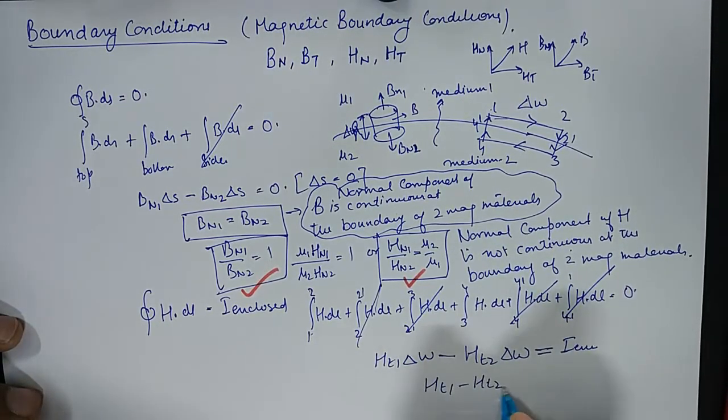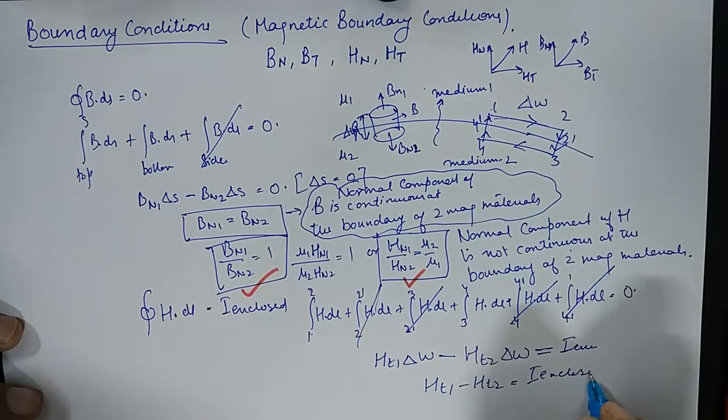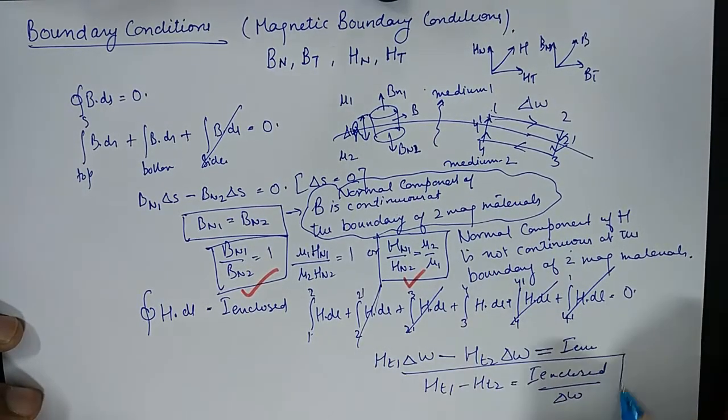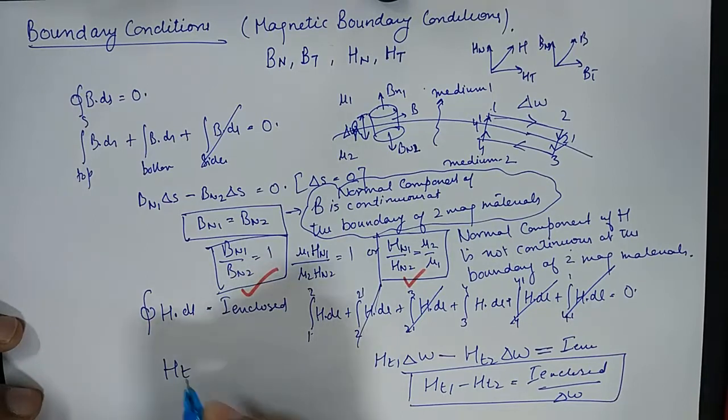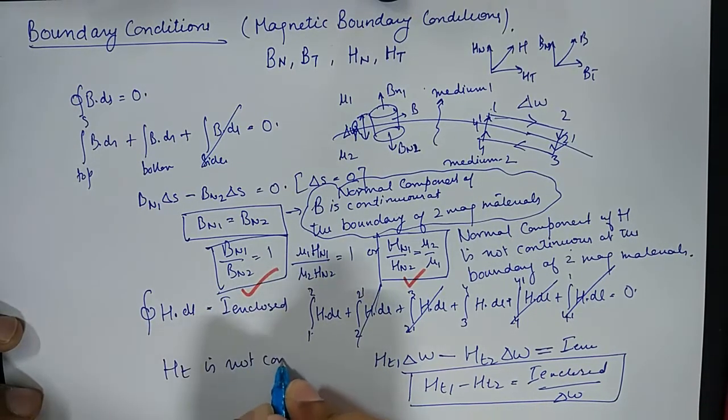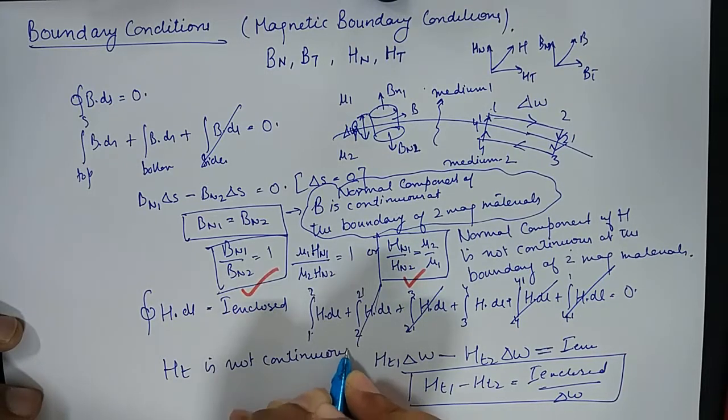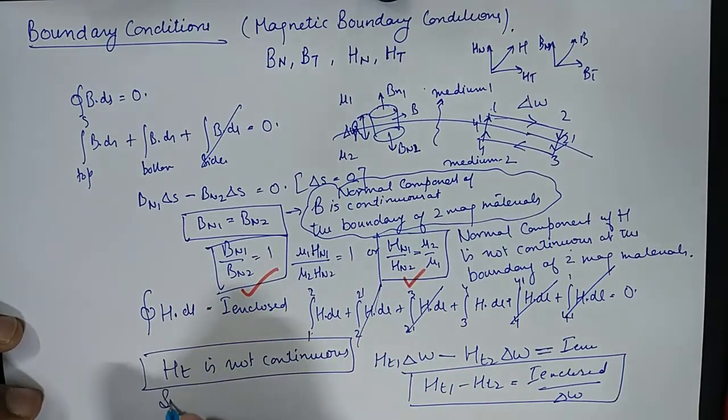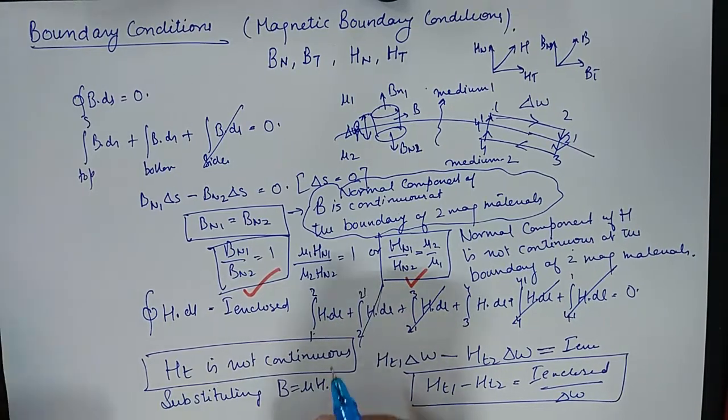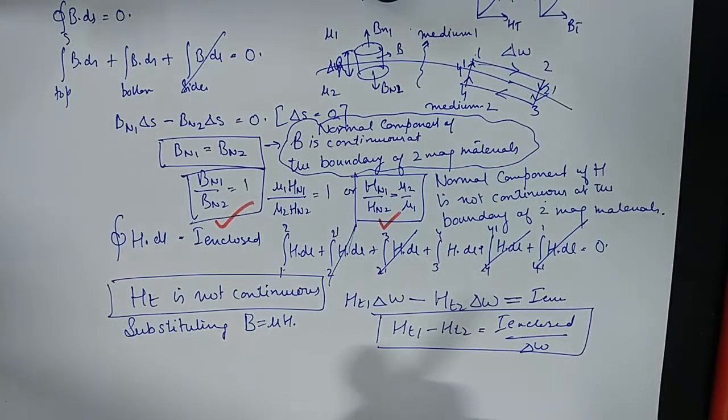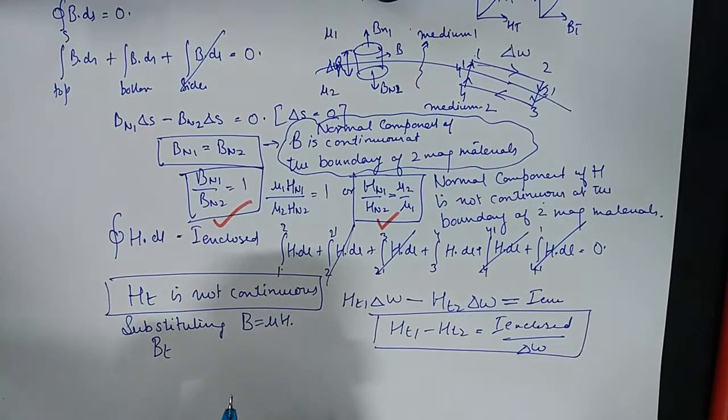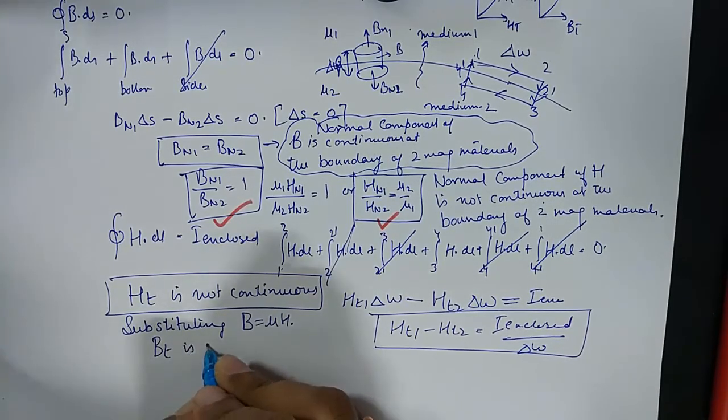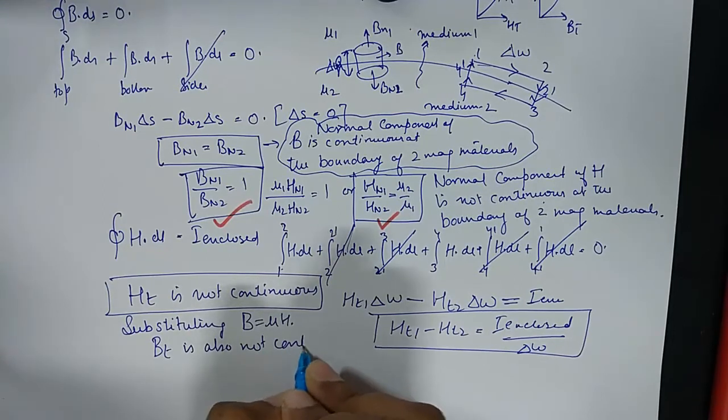So HT1 minus HT2 equals I enclosed upon delta W which becomes a constant. And the fact of the matter is HT1 is not continuous. By substituting B is equal to mu H, we will find that the tangential component of B is also not continuous.